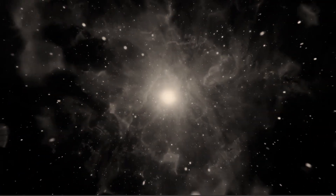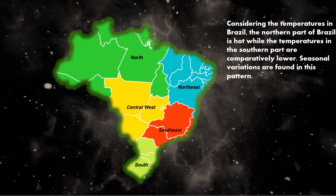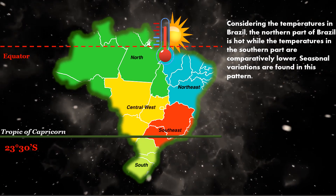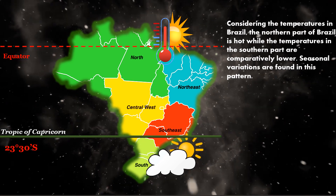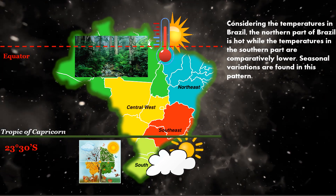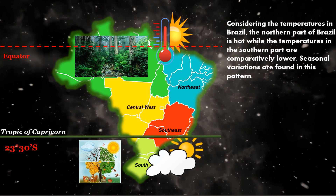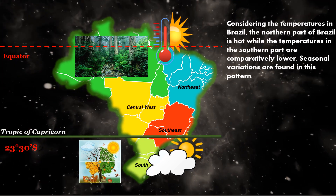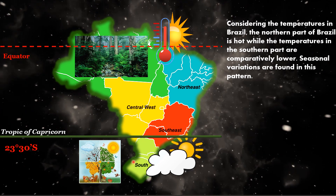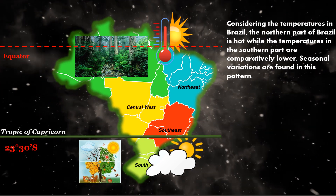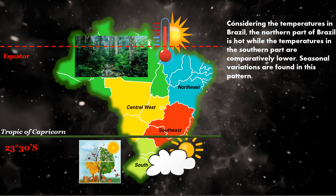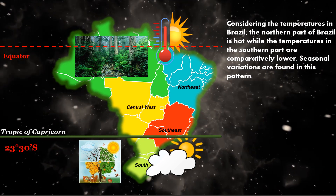Considering temperatures in Brazil, the northern part is hot because of the equator, and the southern part has comparatively lower temperatures because of the Tropic of Capricorn. Throughout Brazil the climate is generally hot and wet, but the southern part is milder and wet, experiencing different seasons — just like four seasons — with some rain all year round, and you may also get snow in winter, which is around July.